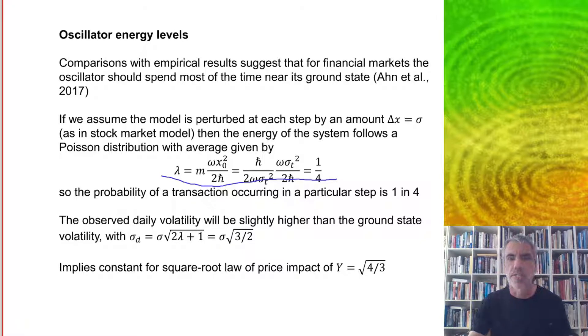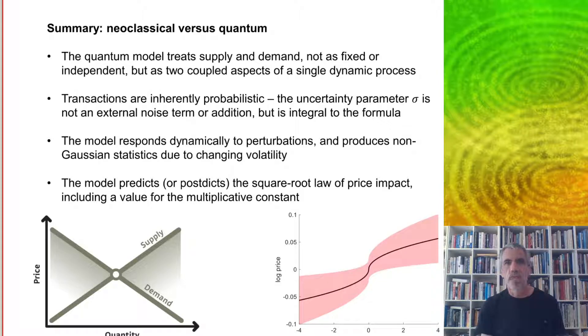This means that the observed daily volatility, because sometimes the energy is a little higher than the ground state, so the observed daily volatility would be slightly higher than the ground state volatility, is boosted by a factor of about square root of 1.5. And because the square root law price impact depends on the daily volatility, this modifies our value of the constant to square root of 4 over 3 which is very close to 1 and it's about in the right area.